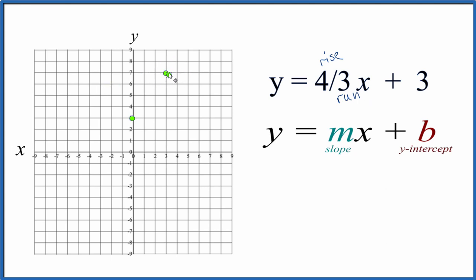Let's take another point here. Let's go 1, 2, 3, 4, and 1, 2, 3. And you can see that's on our line.